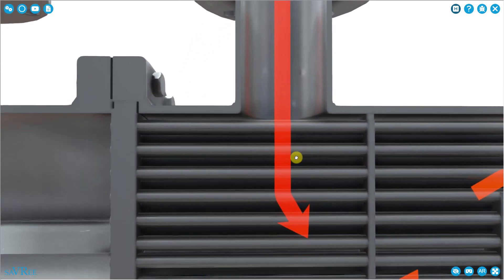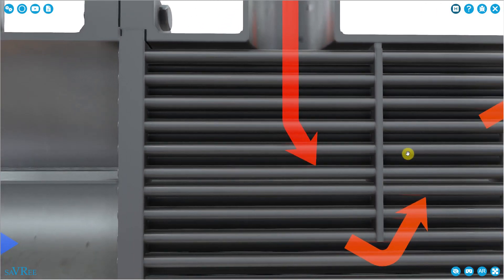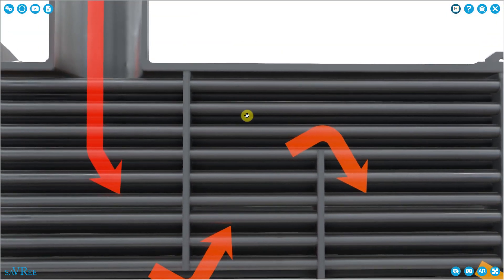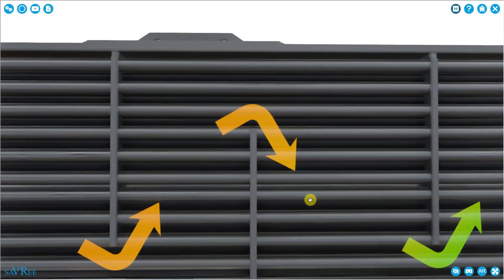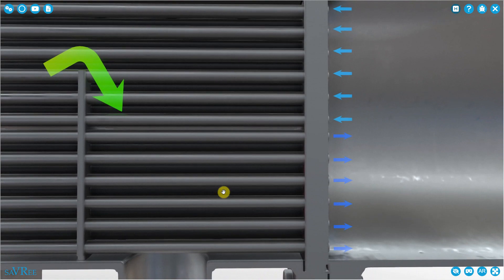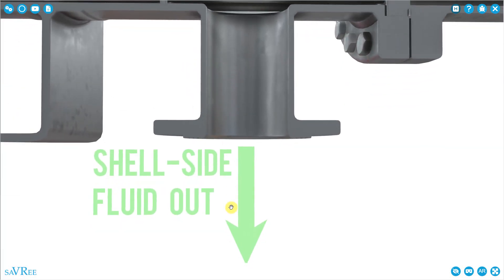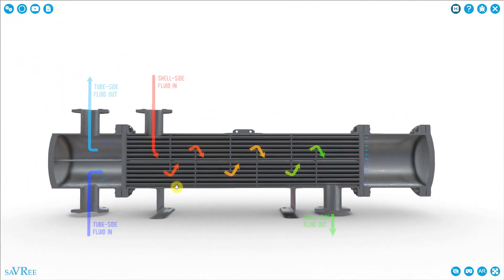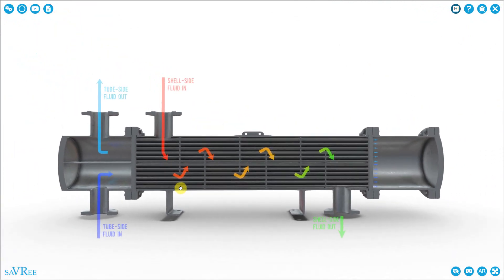We've got a shell side fluid, and you can imagine that it flows on the shell side. It comes in here and it's going to surround the tubes. Then it's forced around these baffles, and in this way we can transfer a lot of heat before the fluid is discharged through this connection here and out the bottom. So that's one type of heat exchanger — there are different designs and variations but they all come under the classification of a shell and tube type heat exchanger.